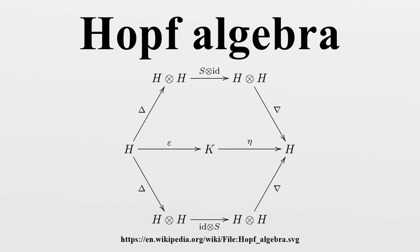Properties of the antipode: the antipode S is sometimes required to have a K-linear inverse, which is automatic in the finite-dimensional case, or if H is commutative or co-commutative.